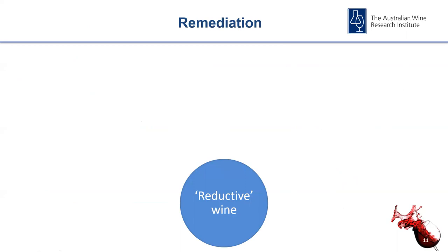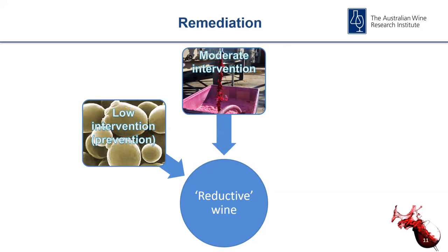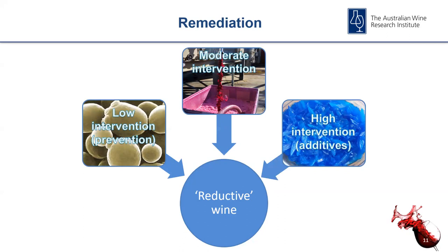So what do you do if you've got a reductive wine? We'll discuss this in three different steps: low intervention or prevention methods; moderate intervention remediation techniques where it needs input from the winemaker but not necessarily specific additives; and high intervention techniques where you actually have to add additives such as copper to clean up your wines.